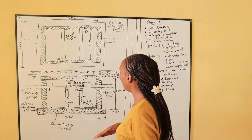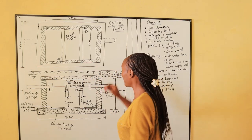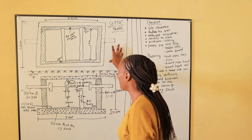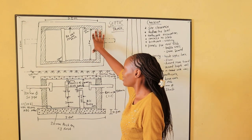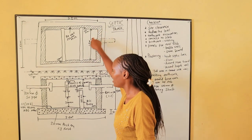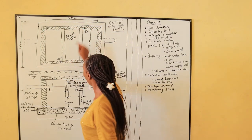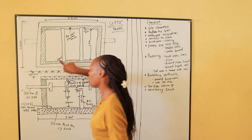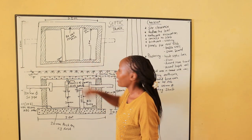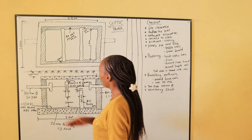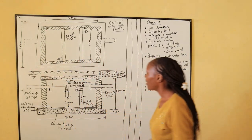The roof slab is 100mm thick. The internal dimensions of the septic tank are 1 meter width by 3 meters length. The scum board and the buffer wall come into the wall at 150mm. The outside dimensions of the septic tank are 1.6 meters.